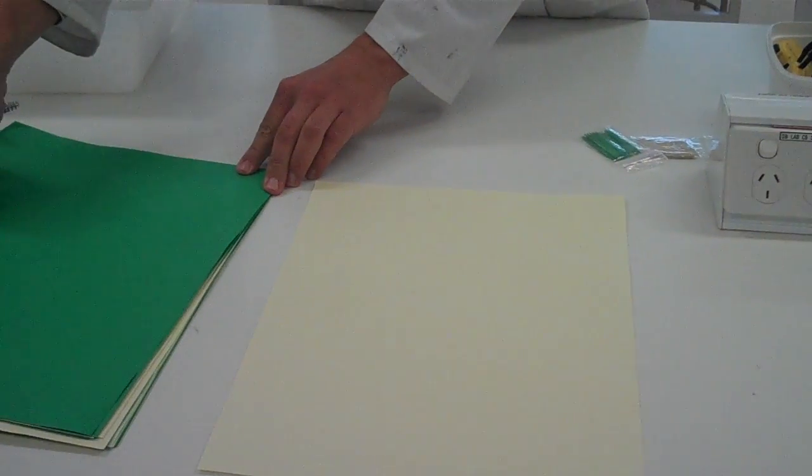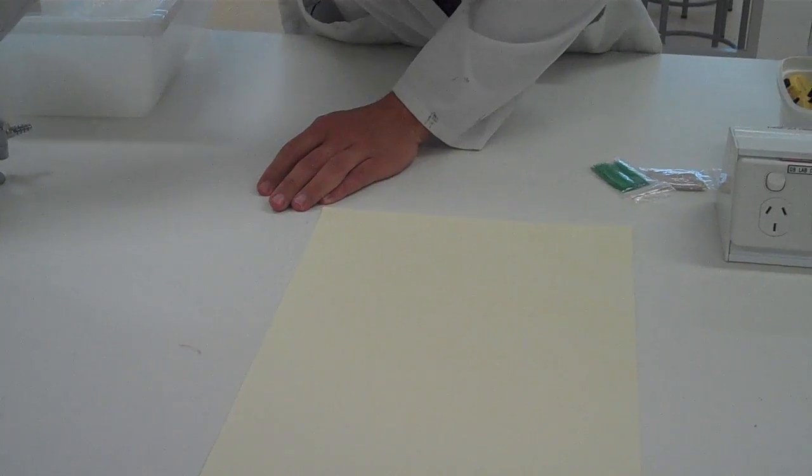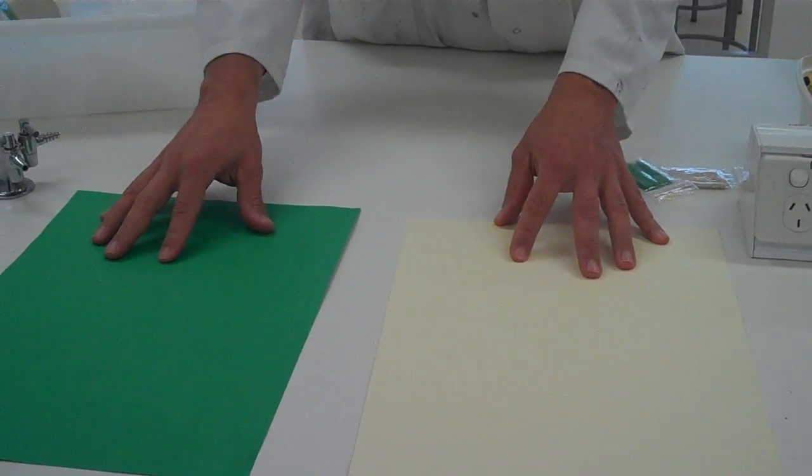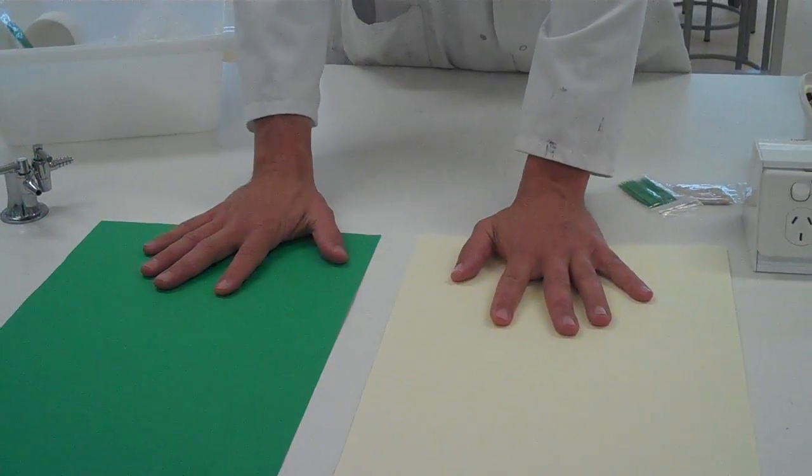Okay, so we have two pieces of paper which represent the two environments. We have beige and we have green. This is meant to represent sand. This is meant to represent grass.